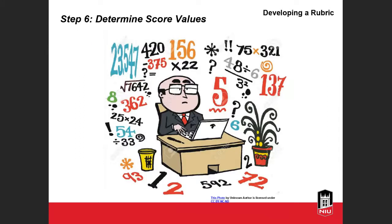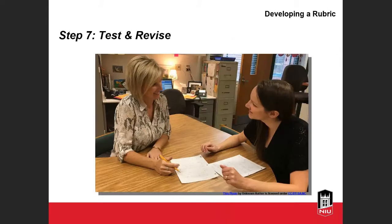Once you've got the descriptors, determine your score values. Identify the maximum number of points for achieving the highest level of quality, assign a number to each of the lower levels, and make sure gradations make sense mathematically depending on the total points available, the number of criteria, and the number of performance levels. Then try it out — compare an initial score without the rubric to one you would give with the rubric, review it with a colleague, use it in class, or take student work from a previous semester and grade it using this rubric to see how it works. Then revise as necessary.